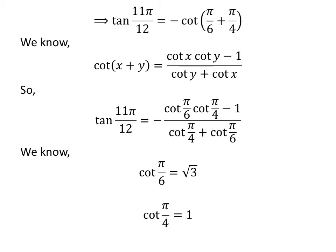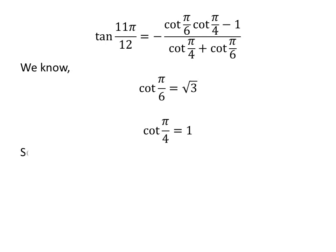As we know, cotangent of pi upon 6 is equal to square root of 3, and cotangent of pi upon 4 is equal to 1. So, we plug in these values in the above expression. We get tangent of 11 times pi upon 12 is equal to minus of square root of 3 times 1 minus 1 upon 1 plus square root of 3.